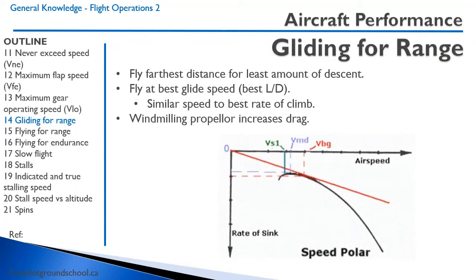Gliding for range means you want to fly the farthest distance for the least amount of descent. We fly at the best glide speed — the best lift-drag ratio. If the propeller is windmilling because the engine has quit, it increases drag. On the speed polar diagram, airspeed is on the x-axis and rate of sink on the y-axis. The bottom of the polar curve is the stall speed; the minimum sink rate is minimum drag. Drawing a tangent line from the origin to the speed polar gives the best glide speed.